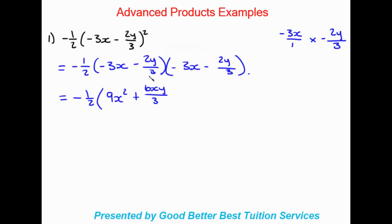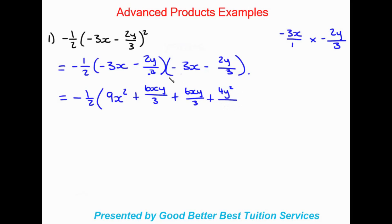Moving on, the second term times the first term in the second bracket works out the same since they are the same two terms. Finally, negative 2y over 3 times negative 2y over 3: numerator times numerator gives 4y squared, denominator times denominator gives 9, so we get positive 4y squared over 9. We'll close off our brackets and move to the next line.